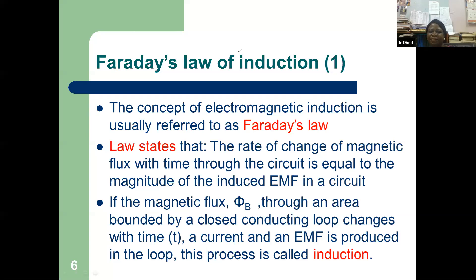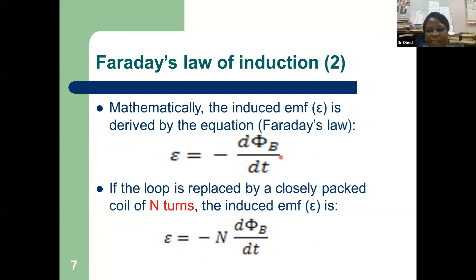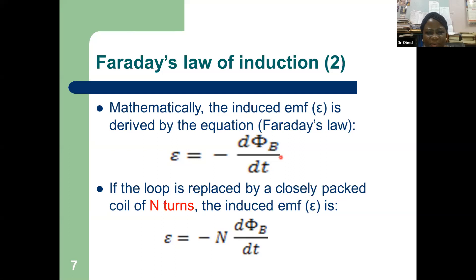If the magnetic flux Phi_B through an area bounded by a closed conducting loop changes with time t, a current and an EMF is produced in the loop — this process is called induction. This can be shown mathematically. If the loop is replaced by a closely packed coil of N turns, the induced EMF is given by: epsilon equals negative N times delta Phi_B over delta t. That's the equation for Faraday's Law.